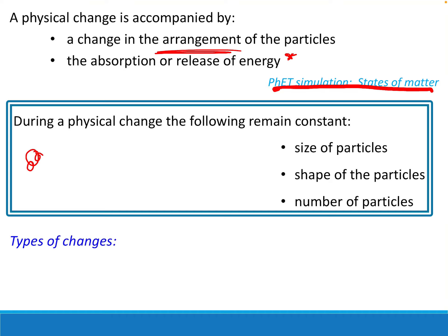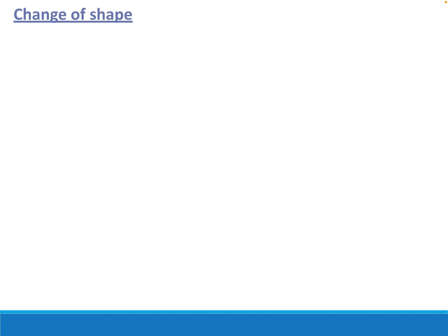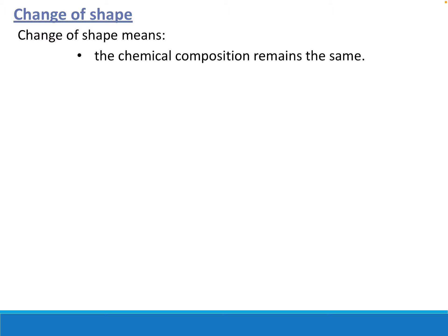What are the types of physical changes? Number one is phase change - solid to liquid to gas, gas to solid, etc. - you've seen this a lot. There's also change of shape, like playing with play-doh or tearing up a piece of paper. There's also changing color. For all of these, the chemical composition stays the same.